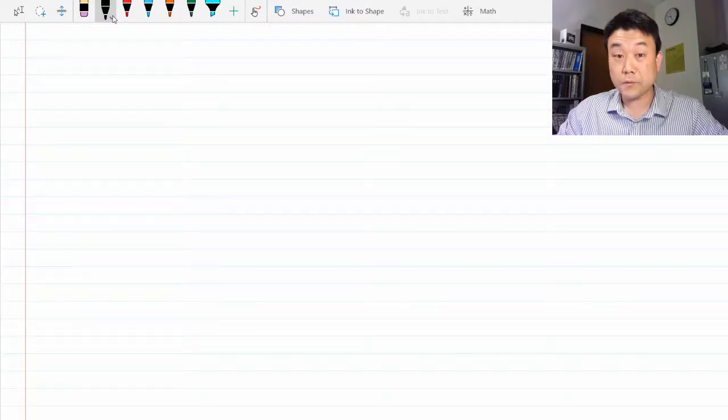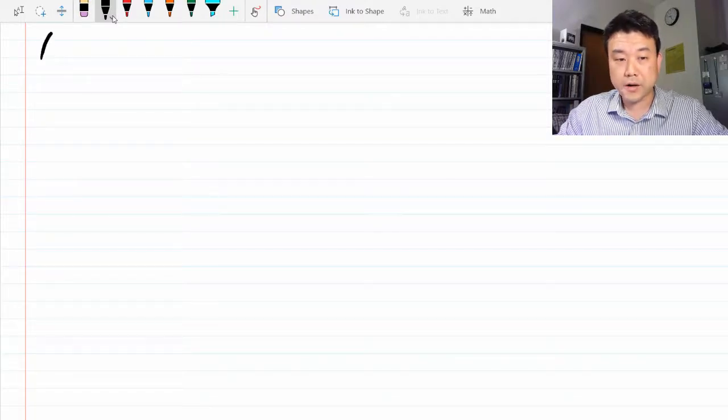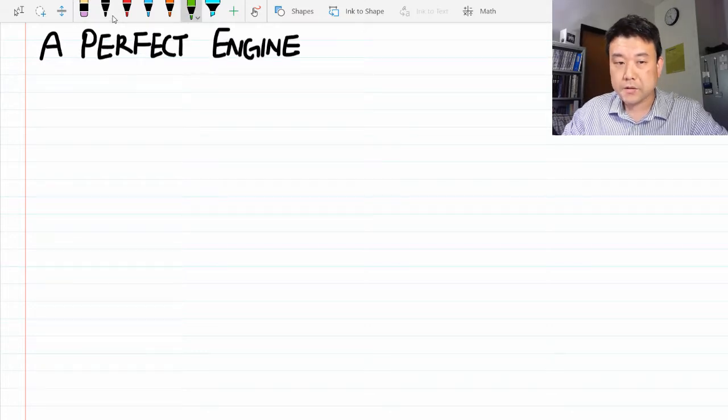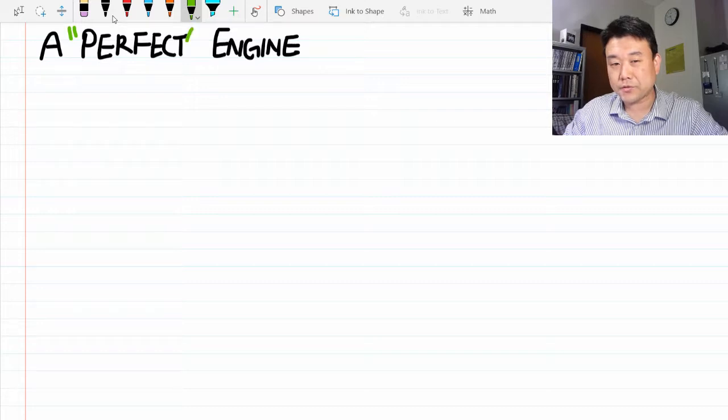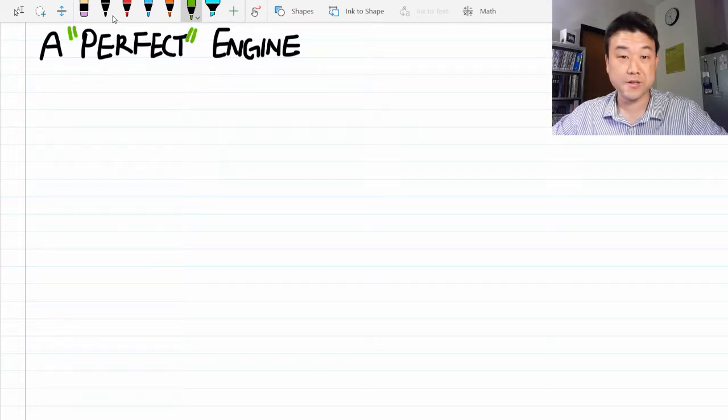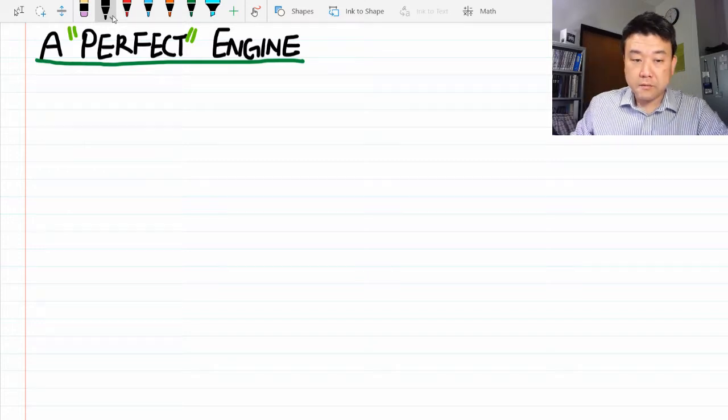Hi. In this short video, I would like to look at an example of a perfect engine. Here, the perfect should be in quotes because what we are going to describe would actually be an impossible engine.